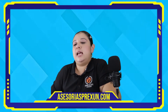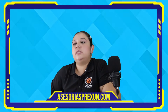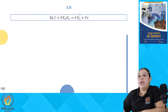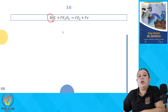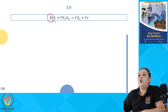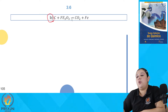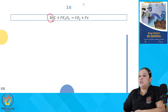Estamos en la página 105 de nuestro libro, resolviendo ejercicio 3.6, específicamente inciso B. Tenemos una reacción que no está balanceada y que nos piden balancear por el método REDOX, donde el carbono reacciona con el óxido de hierro y nos dan como productos dióxido de carbono más hierro.